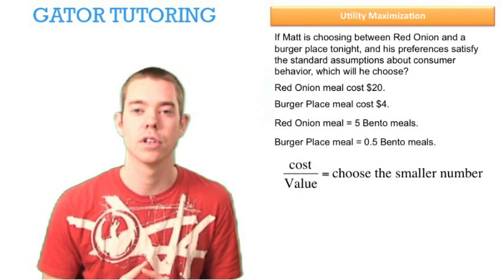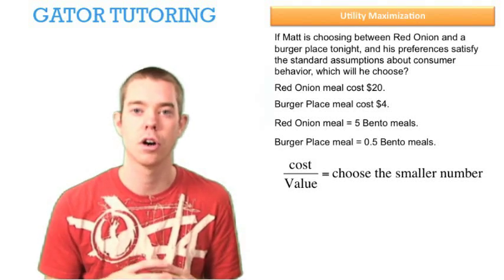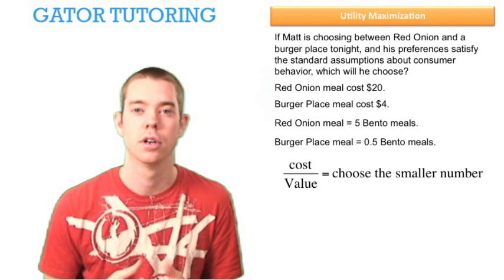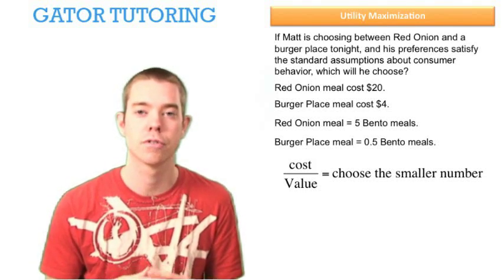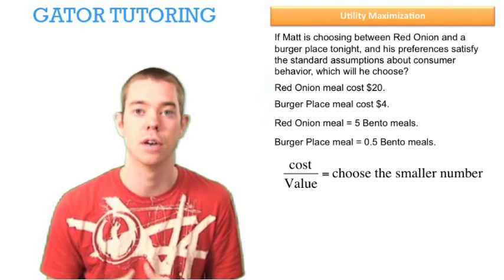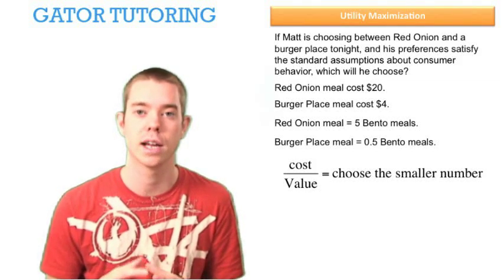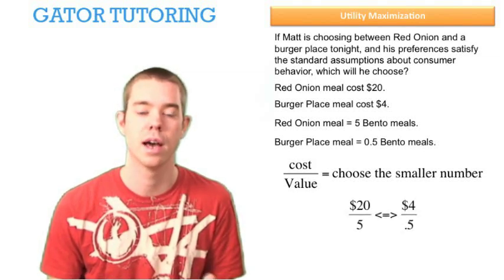There are two ways we can solve this. The first way is where we put cost divided by value. We want to choose the smaller number because this is saying: how much does it cost for the next unit of utility or value? We'd want to choose the restaurant that is cheaper to get our next unit of utility. So let's analyze this.